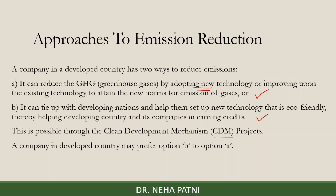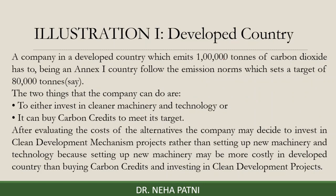Developed countries are required to get themselves added to the Annex 1 list and follow emission norms. Let's say a country must set a target of 80,000 tons but is already emitting one lakh tons of CO2. They can either invest in cleaner machinery or technology, or buy carbon credits to meet the set target. After evaluating the cost of alternatives, companies may opt for CDM projects because setting up new machinery can sometimes be more costly than funding clean development projects.